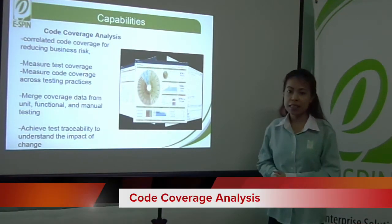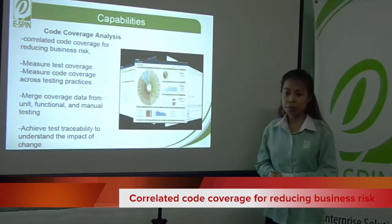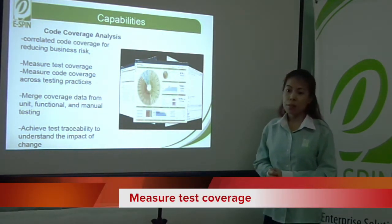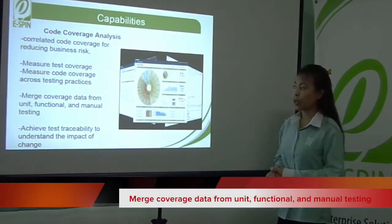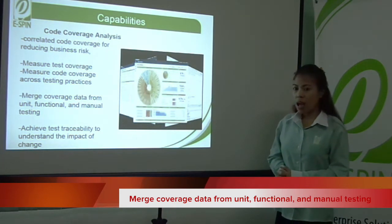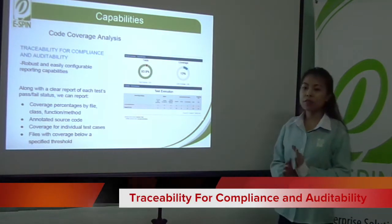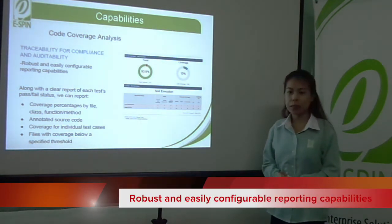Code coverage analysis provides correlated code coverage for reducing business risk. It allows you to measure test coverage and code coverage across testing practices, merge coverage data from functional and manual testing, achieve test traceability to understand the impact of change, and satisfy traceability for compliance and auditability, all with robust and easily configurable reporting capabilities.